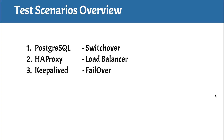We are going to test the readiness of three components: Postgres, HAProxy, and Keepalived configurations for production. This test is essential to ensure that these components are properly configured and functioning — that's critical for maintaining the stability and performance of our system. We'll start with Postgres.